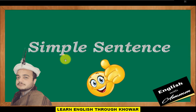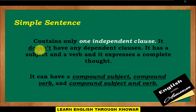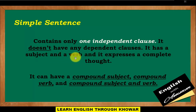Bismillahirrahmanirrahim, assalamu alaikum. Dear English learners, this English lesson is about the simple sentence. A simple sentence contains only one independent clause. It doesn't have any dependent clauses. It has a subject and a verb, and it expresses a complete thought.